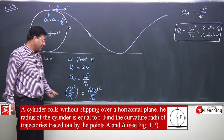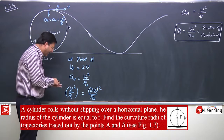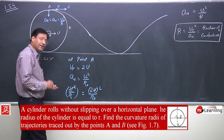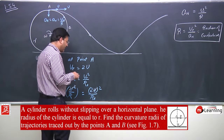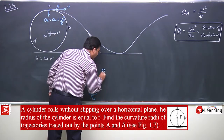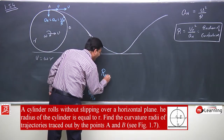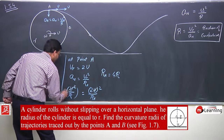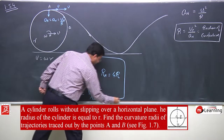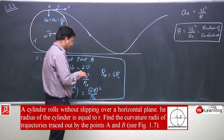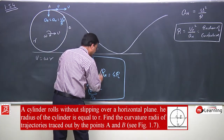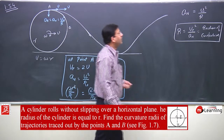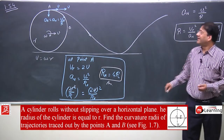The v squared terms cancel out, and we get the radius of curvature at point A equals 4r. This is the answer — the radius of curvature at point A is 4r.